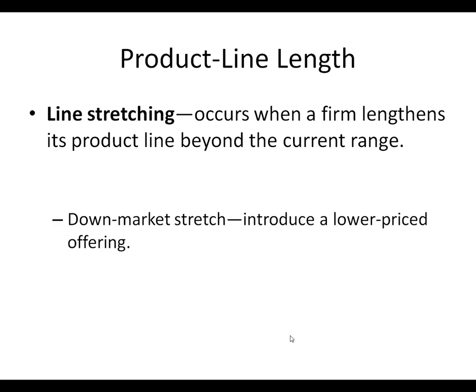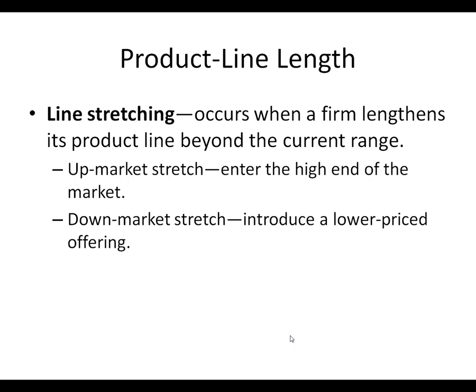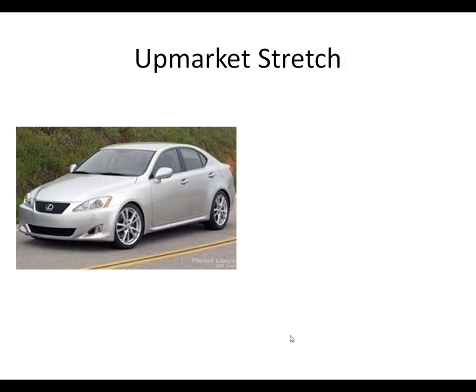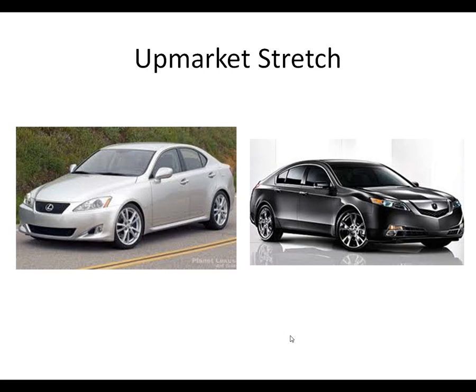A down-market stretch is when you introduce a lower-priced offering. An up-market stretch is when you enter the higher end of the market. A two-way stretch is when you add both higher and lower ends of the spectrum to your product lines. For an up-market stretch example: in the late 80s, Toyota added Lexus, Honda added Acura, Nissan added Infiniti, and way back when, General Motors added Cadillac. These are all considered up-market stretches — going after the higher end of the market.